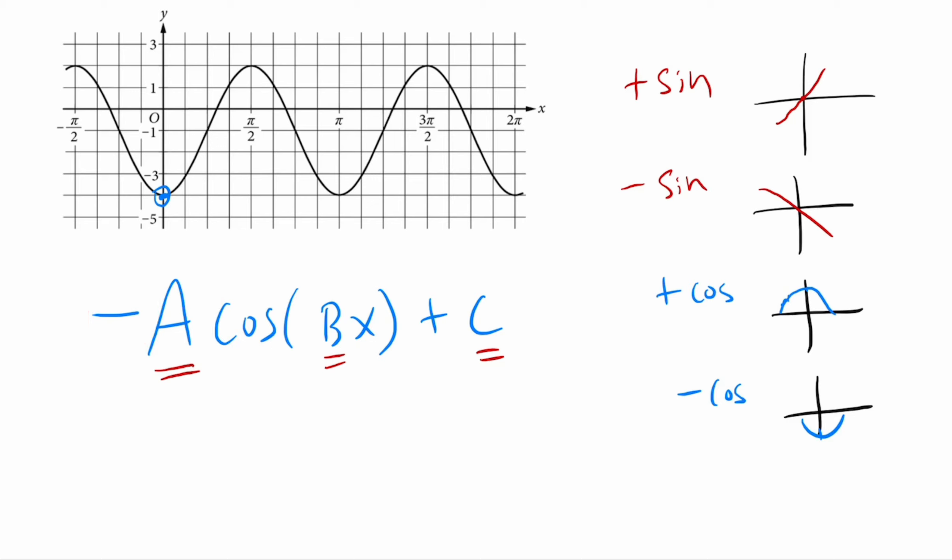The A is the amplitude, which is just the max minus min over 2. It's basically the distance from the middle to either extreme. The C, the center, is the average of the max and the min, a.k.a. the exact middle. So it's the max plus min over 2. And the B is related to the period, meaning how often it repeats itself, and it's 2 pi over the period.